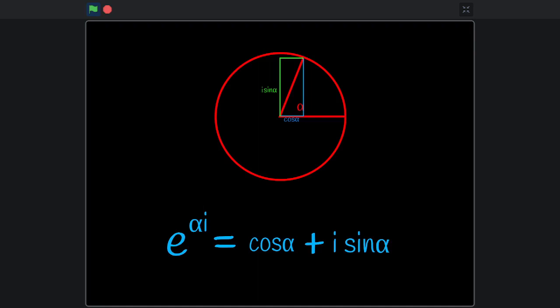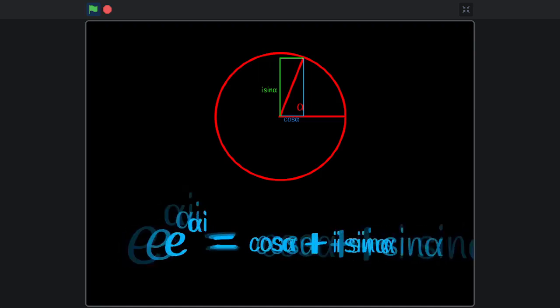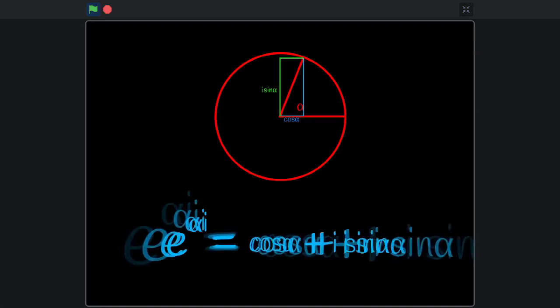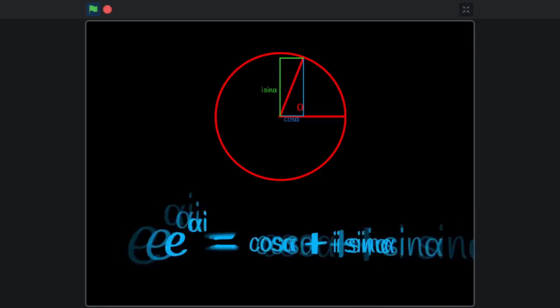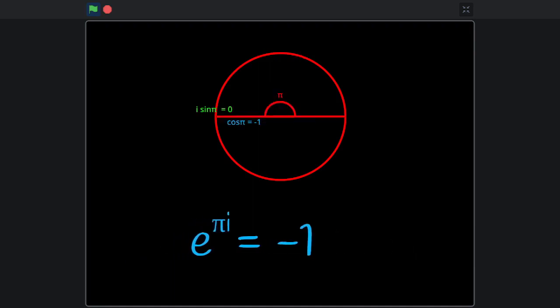So given an angle alpha, e to the power of alpha i equals to the sum of its real cosine x, and the imaginary sine y. That wasn't so hard. After all, the Euler's formula is way simpler than it looks at first.